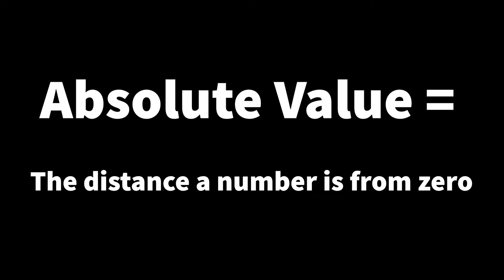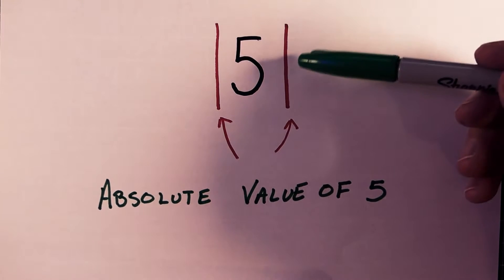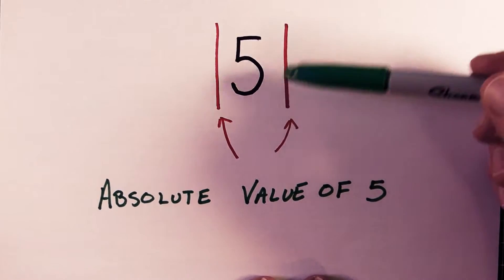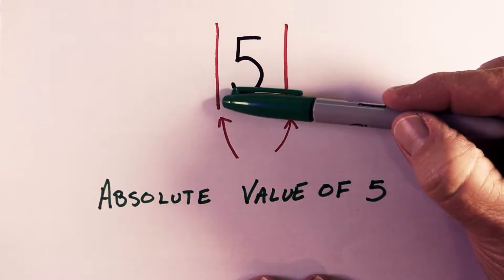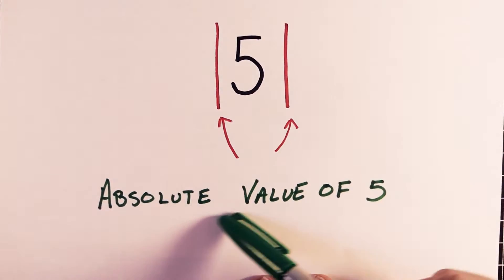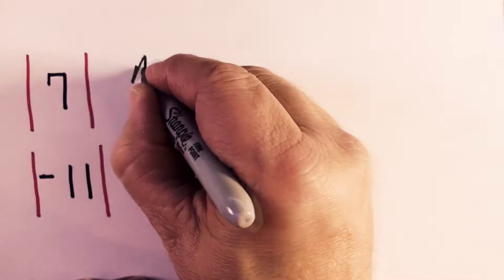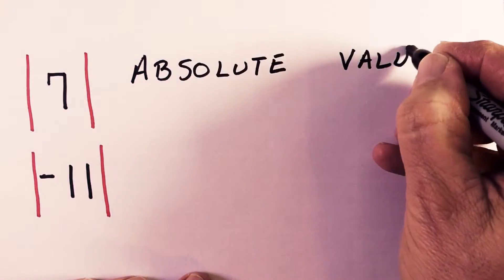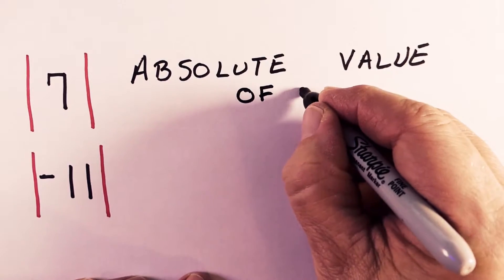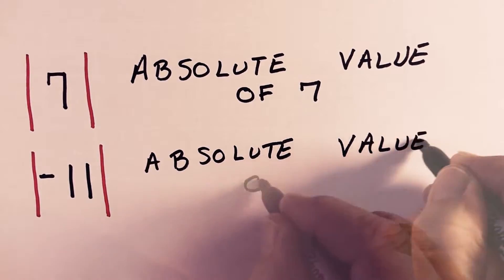First we're going to talk about the fundamentals of absolute value. Absolute value is just basically the distance the number is away from zero. When you're looking at the absolute value, you're going to see a line on the right and the left side, usually a little higher and lower than the number itself. The number that's inside is what we're trying to find the absolute value of. So in these two examples, this would be the absolute value of seven, and the next one would be the absolute value of negative 11.